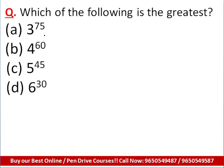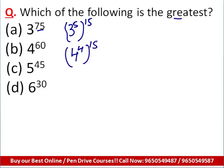The first question says: which of the following values is greatest — 3 raised to power 75, 4 raised to power 60, 5 raised to power 45, and 6 raised to power 30? These are huge numbers, so how do we find the greatest quickly? Focus on the powers: 75, 60, 45, and 30. I'm going to write 3 raised to power 75 as (3 raised to power 5) raised to power 15, because 75 is 15 × 5. Similarly, 4 raised to power 60 can be written as (4 raised to power 4) raised to power 15, because 60 is 15 × 4.